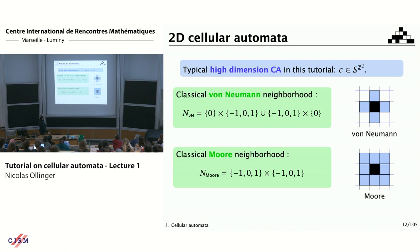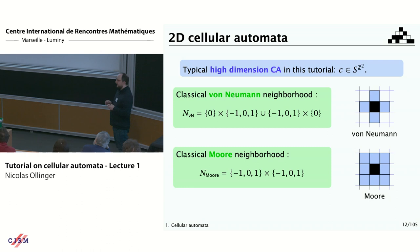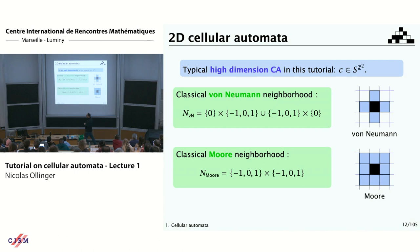We need to talk about neighborhoods. I will only talk about dimension one and dimension two, though most things apply to all dimensions. In dimension two, there are two classical neighborhoods: either the first neighbors in the style of von Neumann — north, south, east, and west — or in the style of Moore. Of course, there are ways to simulate each neighborhood with the other.